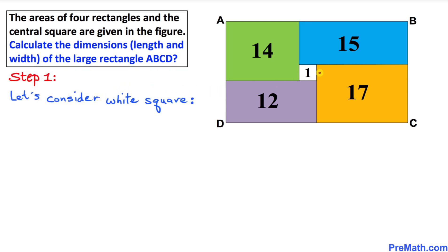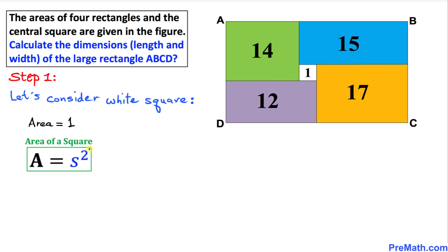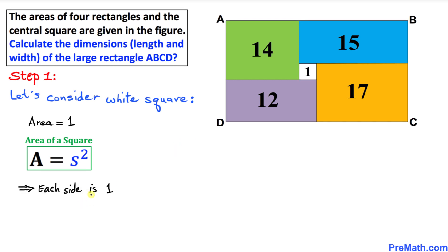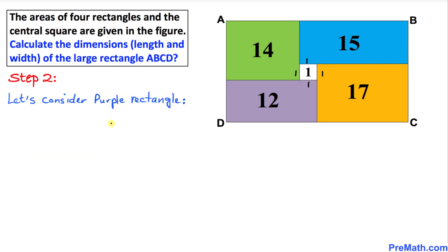Let's consider the white square in the middle. We know that the area of this square is 1, and since the area of a square equals S squared, each side of this square is 1. So each of the four sides equals 1.